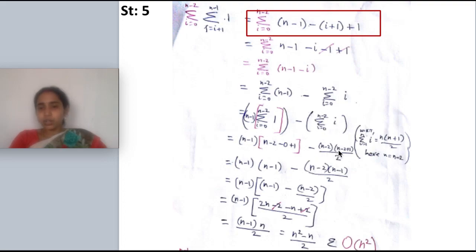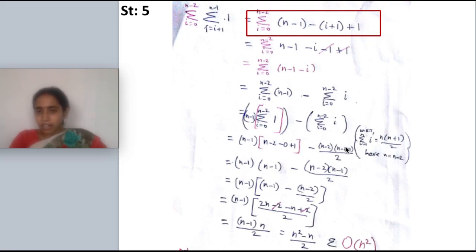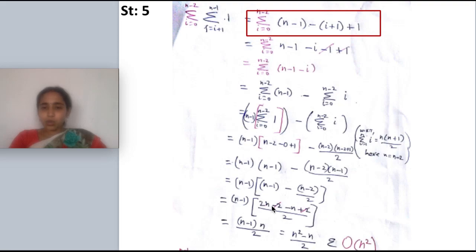So n minus 2 plus 1 gives n minus 1, making the second term (n minus 2)(n minus 1)/2. The first part simplifies to (n minus 1) times (n minus 1), which is (n minus 1) squared. In both terms, (n minus 1) is common, so we factor it out: (n minus 1) times [n minus 1 minus (n minus 2)/2].